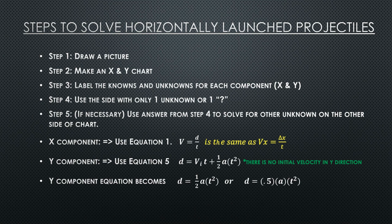Step 2: Make an X and Y chart. Step 3: Label the knowns and unknowns for each component. Step 4: Solve for the side with only one unknown or one question mark.